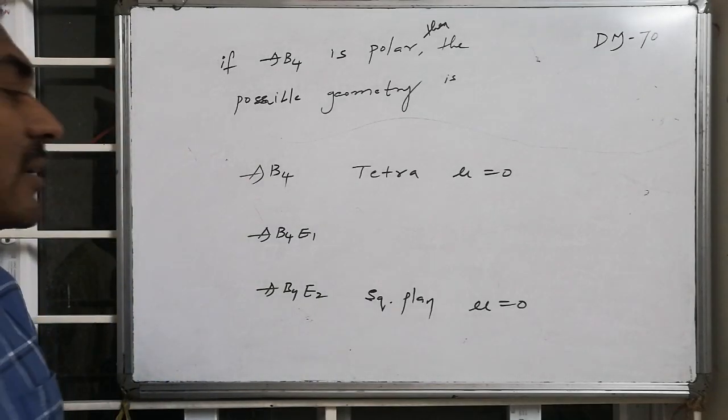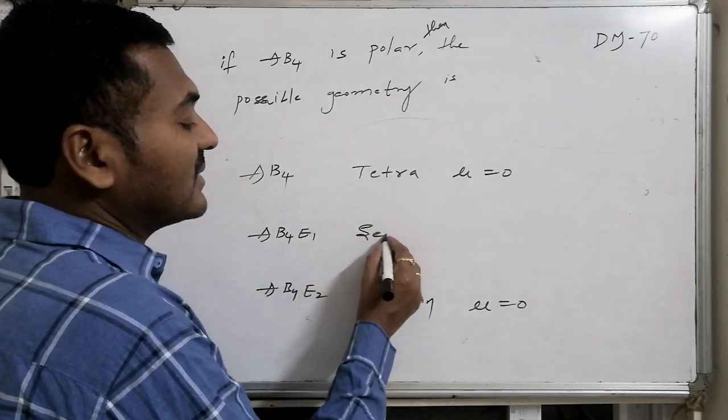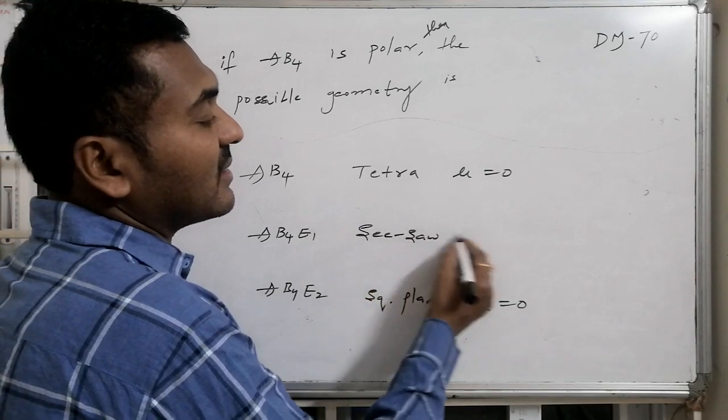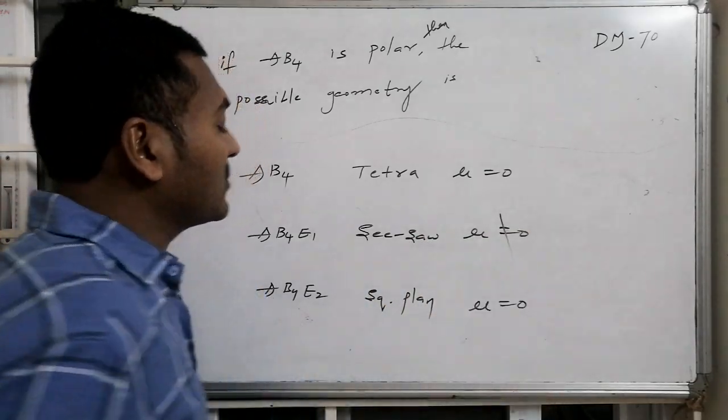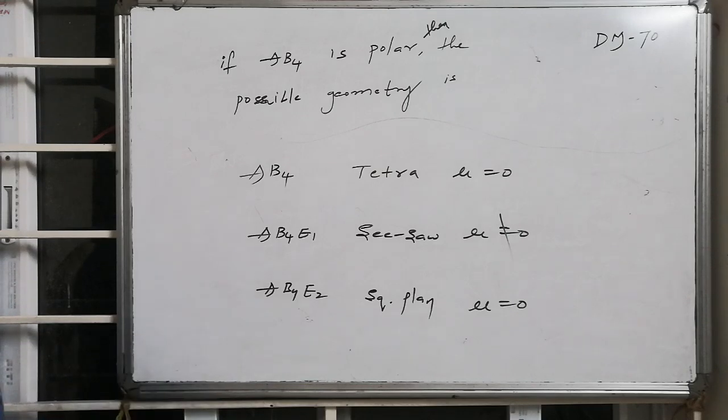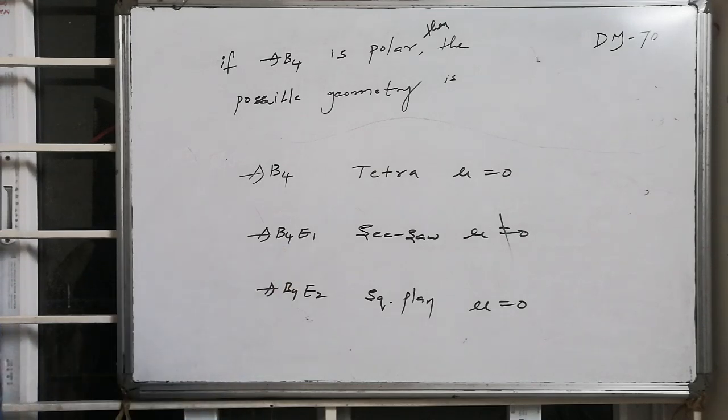is a derivative of trigonal bipyramidal, said to be seesaw shape. If it is seesaw, then mu is not equal to zero, whereas this particular one appears as a C-sign shape.